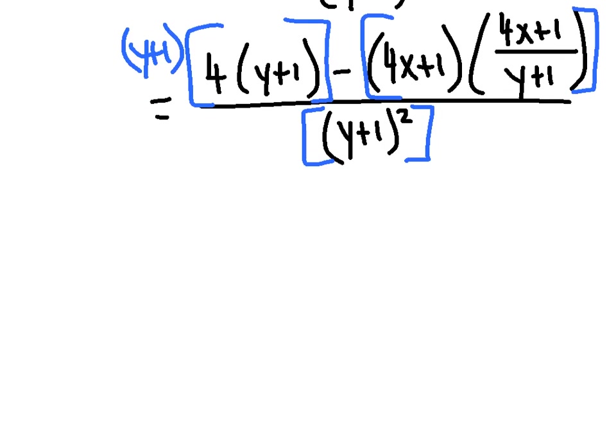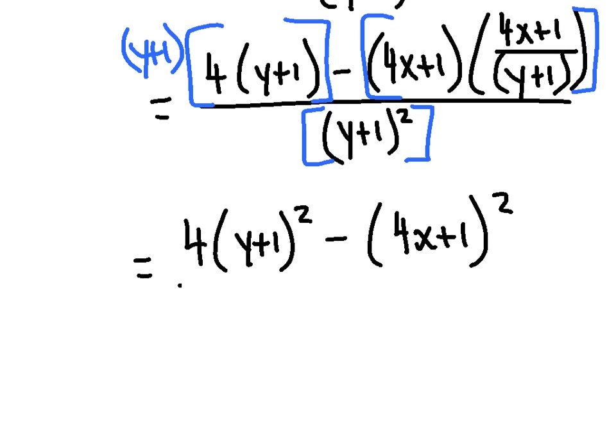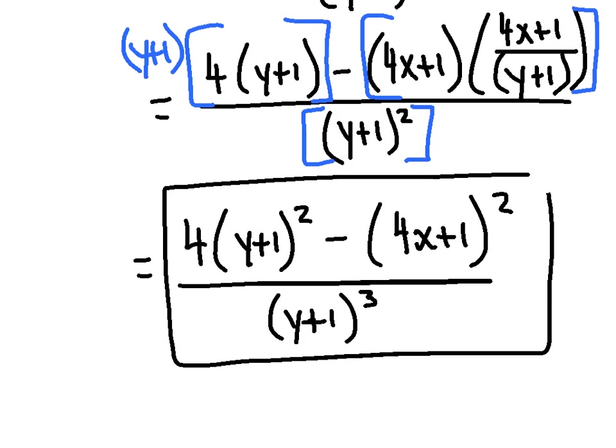And of course, why did I decide on that? Well, whatever the denominator was here, that's what I was going to eventually multiply everything by. So I've got 4 quantity y plus 1 squared, and then I've got minus the quantity 4x plus 1 squared all over. Don't forget about this guy. This is probably the one that gets forgotten about the most. This one's now going to be cubed. And that's what I would say is my final answer for my second derivative of that function.